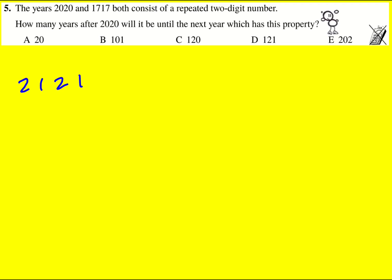There can't be anything in between where it's repeated, so we just need to work out the difference: 2,121 minus 2020, and that is going to give 101.